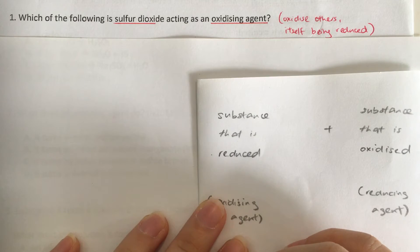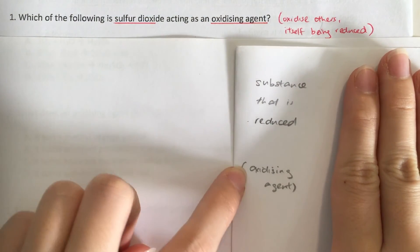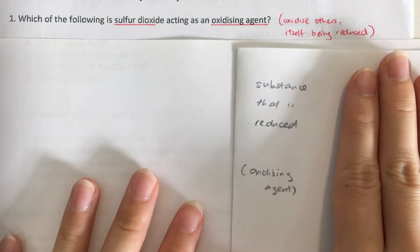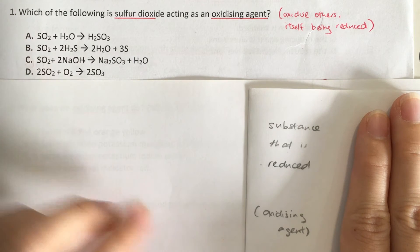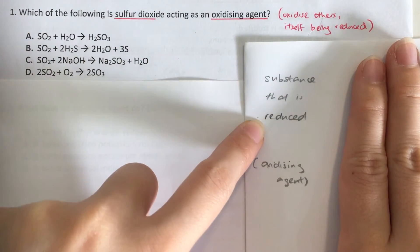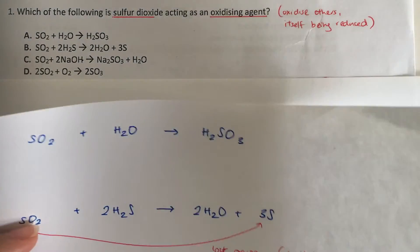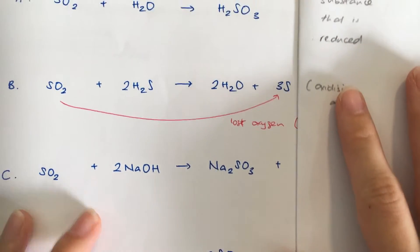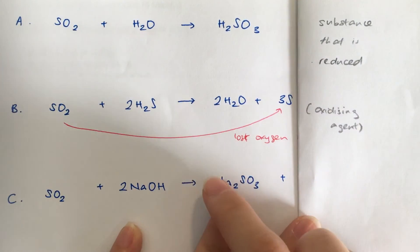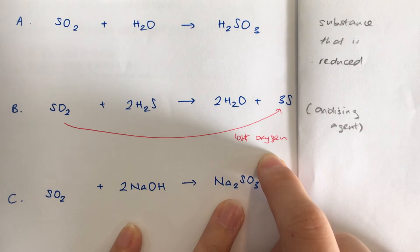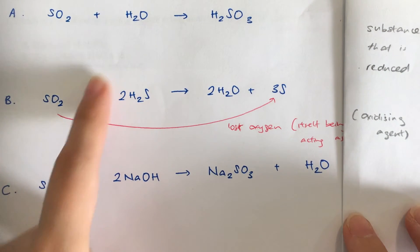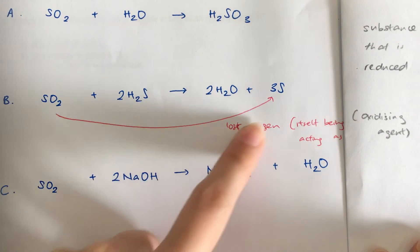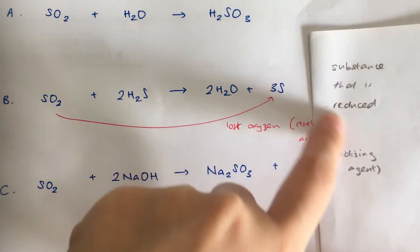Question one: which of the following shows sulfur dioxide acting as an oxidizing agent? An oxidizing agent means it will itself be reduced. To be reduced means a loss of oxygen, gain of hydrogen, gain of electrons, or a decrease in oxidation state. Option A is not straightforward so we skip it first. Option B is straightforward — sulfur dioxide has lost oxygen, which means it has been reduced.